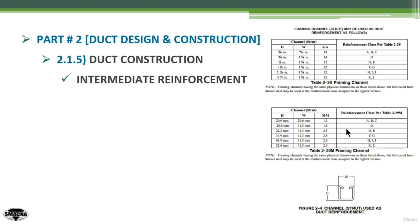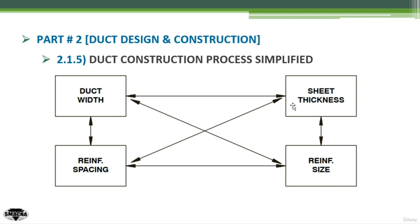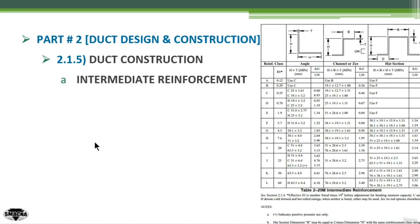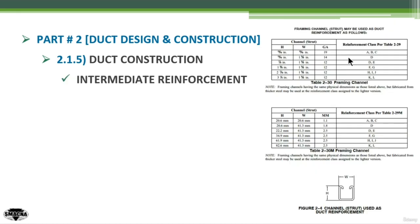We can see this table in both mm and inch units — SI and British units. For the slotted channel, you have three inputs: the height, the width, and the gauge of the channel. Based on the reinforcement class, you can obtain from the earlier tables the reinforcement requirement based on the pressure classification. Going back to those tables, you can have reinforcement classifications C, B, E, D, F, etc. This denotes the reinforcement classification for the slotted channels, and we can use it as the entry point to get the dimensions of the slotted channel or the framing channel.